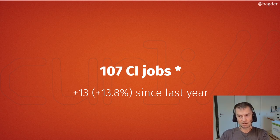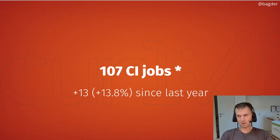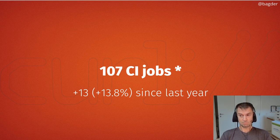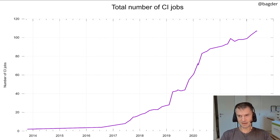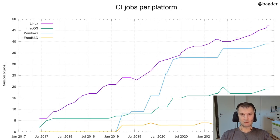As part of increasing the number of tests, we also increased the number of CI jobs running those tests on different platforms and build combinations. We added 13 new ones, up to 107 CI jobs. We've really pumped that number over the last three to four years since CI usage in the project took off. Most jobs run on Linux, but we have a fair amount of Windows and macOS ones too, and a few on FreeBSD.